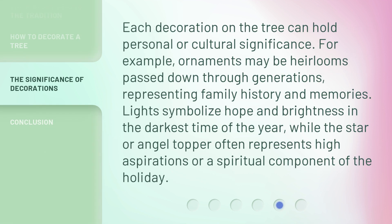Each decoration on the tree can hold personal or cultural significance. For example, ornaments may be heirlooms passed down through generations, representing family history and memories. Lights symbolize hope and brightness in the darkest time of the year, while the star or angel topper often represents high aspirations or a spiritual component of the holiday.